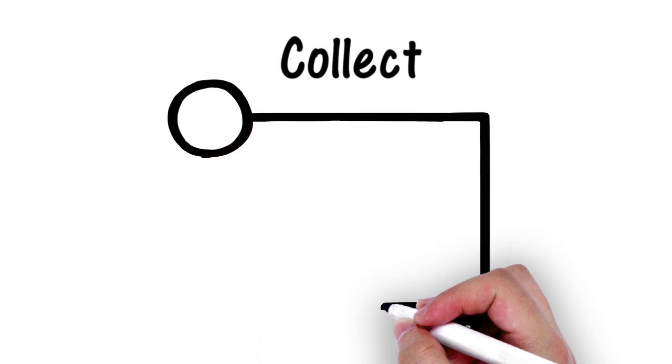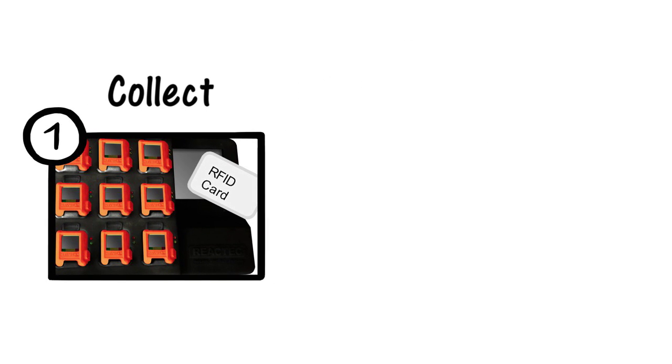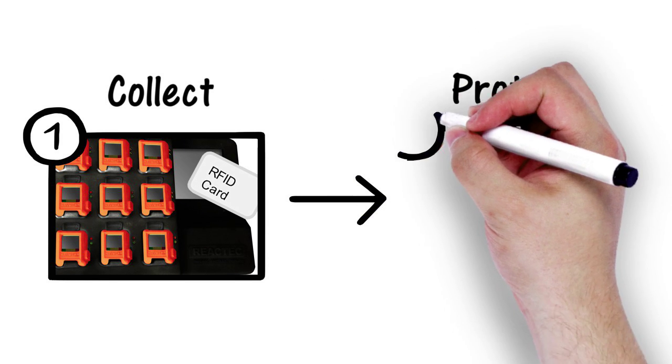Each operator uses a personalized RFID card containing their exposure action level thresholds to sign out a Havware from a docking station at the start of their shift. The Havware device is placed into a wrist strap and fitted snugly onto the wrist.